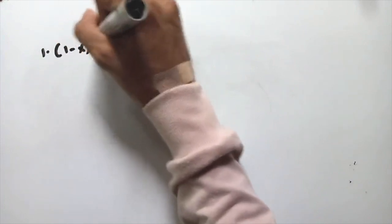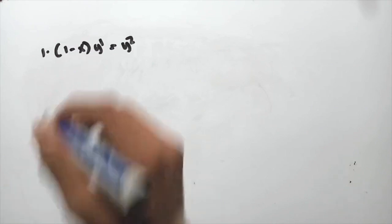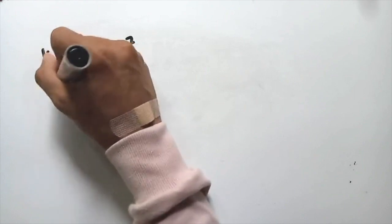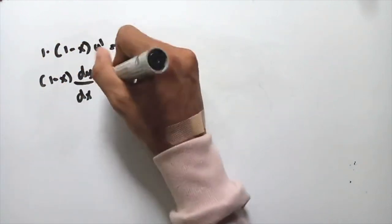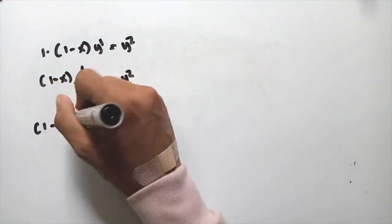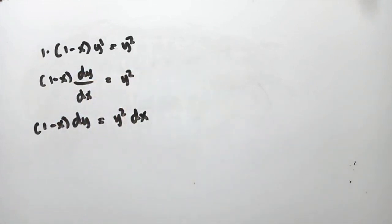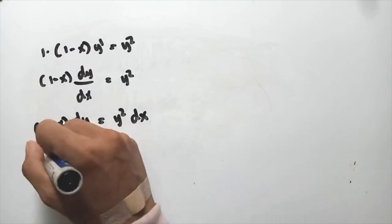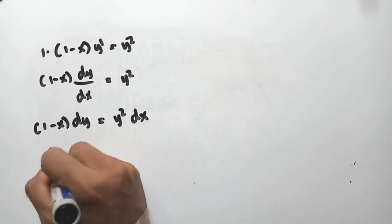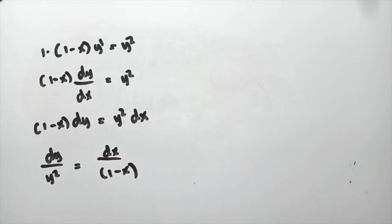For example number one: (1 − x)y′ = y². This problem can be separated. We can write this as (1 − x) dy/dx = y², hence (1 − x) dy = y² dx. Dividing both sides by (1 − x) and y², this becomes dy over y² equal to dx over (1 − x).